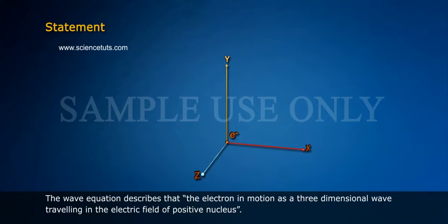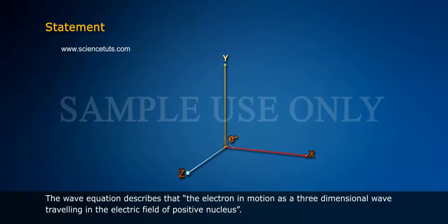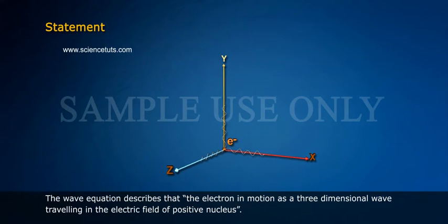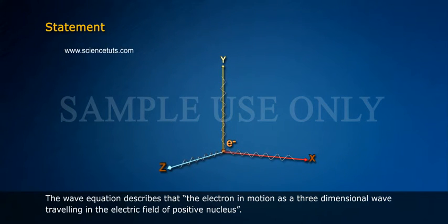The wave equation describes that the electron in motion has a three dimensional wave travelling in the electric field of positive nucleus.